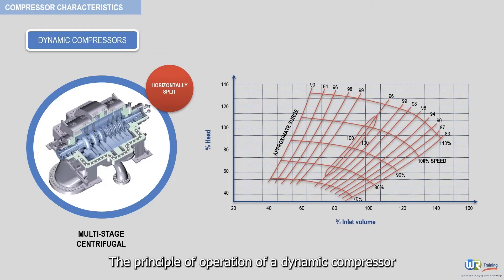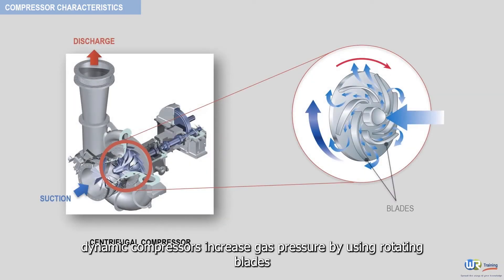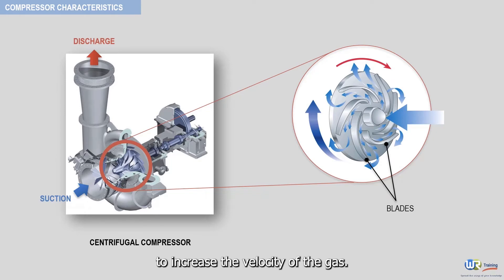The principle of operation of a dynamic compressor always seems more difficult to understand than that of a positive displacement compressor. As seen in a previous video, dynamic compressors increase gas pressure by using rotating blades to increase the velocity of the gas.